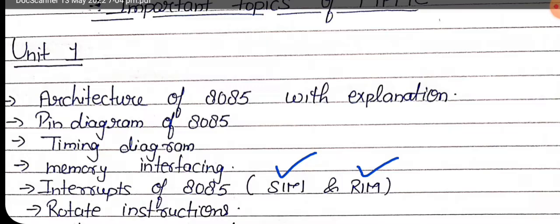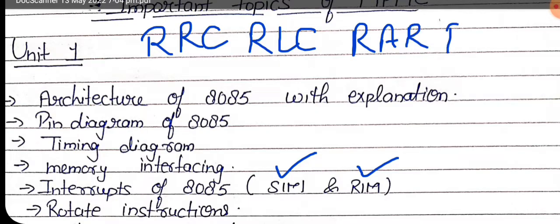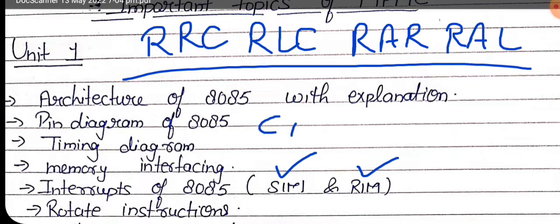Second thing, what's important - instructions that are asked directly are rotate instructions. It's not necessary that rotate is written, it can be anything - RRC, RLC, RAR or RAL. Any of these instructions can be asked. They can ask what is the function of CALL. So instructions that are slightly different from others can be asked. This can come in two marks or in ten marks also. So this is all about unit one.